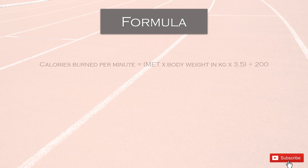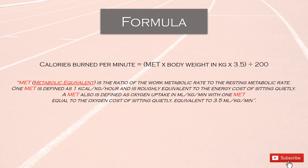So the formula — if you want to know how many calories you burn per minute — you need to multiply MET times body weight in kilograms times 3.5, divided by 200. MET, or metabolic equivalent, is the ratio of the work metabolic rate to the resting metabolic rate. One MET is defined as 1 kilocalorie per kilogram per hour and is roughly equivalent to the energy cost of sitting quietly. MET is also defined as oxygen uptake in milliliters per kilogram per minute, with one MET equal to the oxygen cost of sitting quietly, equivalent to 3.5 milliliters per kilogram per minute.